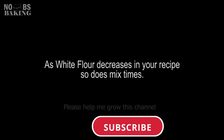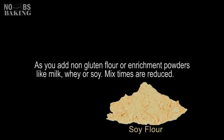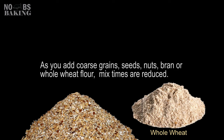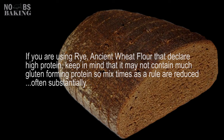I've covered this stuff in my flour protein and mixing videos. Remember: as white flour decreases in your recipe, so does your mix times. As the protein content of your flour decreases — say you go from a nice strong bread flour to an all-purpose — mix times are reduced. As you dilute your flour with non-gluten flours or powder additives, mix times come down. As the quantity of coarse ingredients goes up, including whole wheat flour, mix times are reduced. As you shift away from white flour, opting for rye or breads made from ancient wheats, remember that although these flours can boast very high protein levels, they're often low in gluten-forming protein, requiring very little mixing.